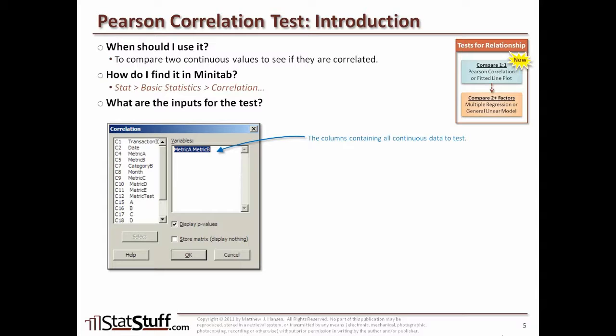What's really cool about this test is you can select more than one continuous value and add them all to the list of variables. We're still only comparing one value at a time, but if you add more than two variables into the box, it will create a matrix that runs all cross-possibilities between all the variables you select.